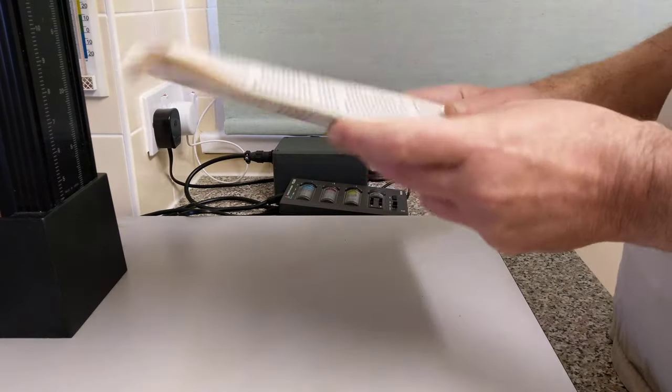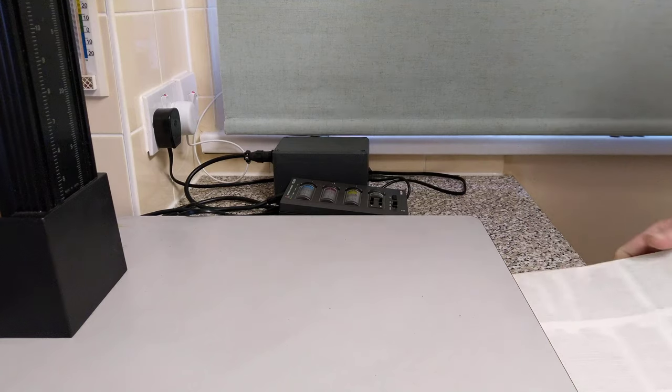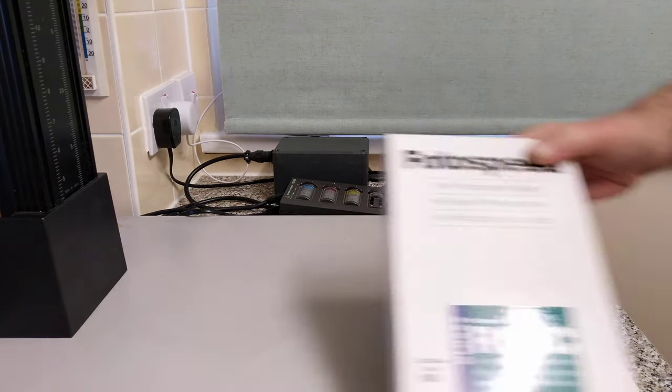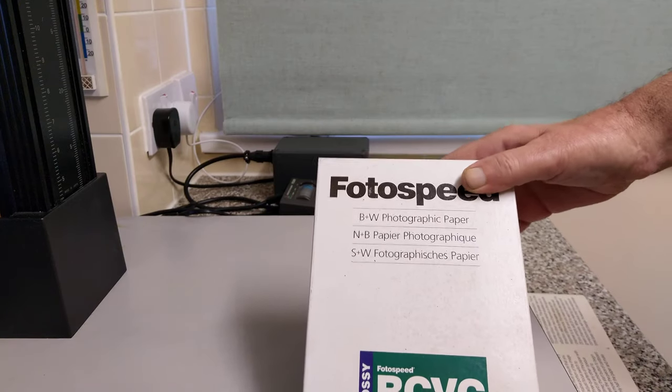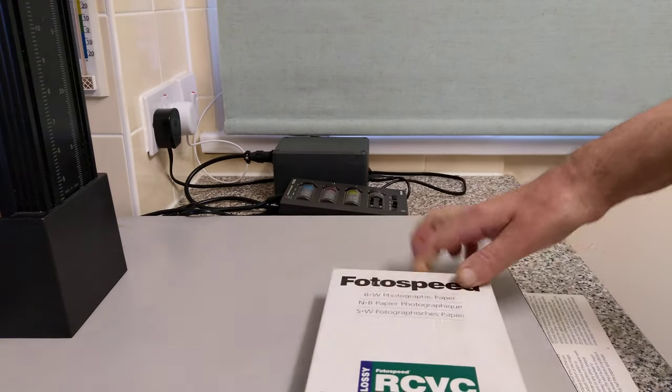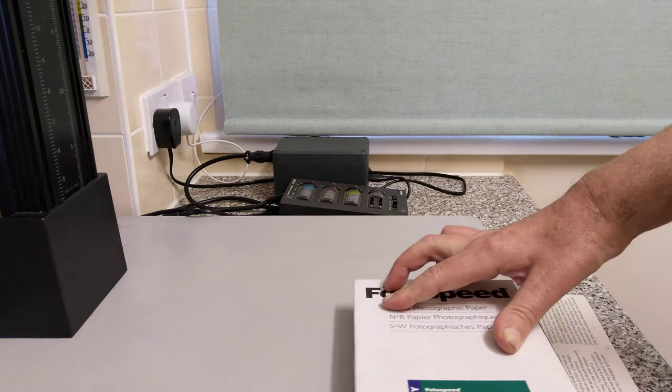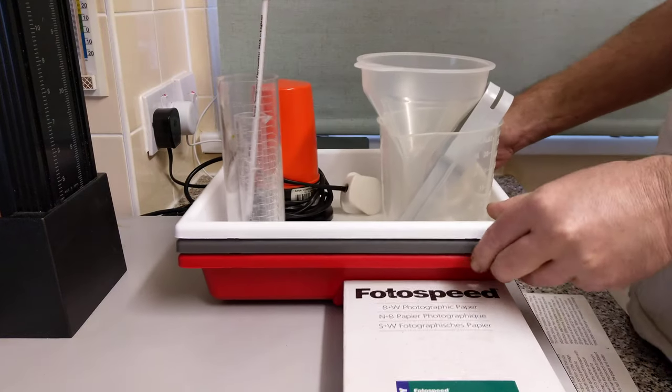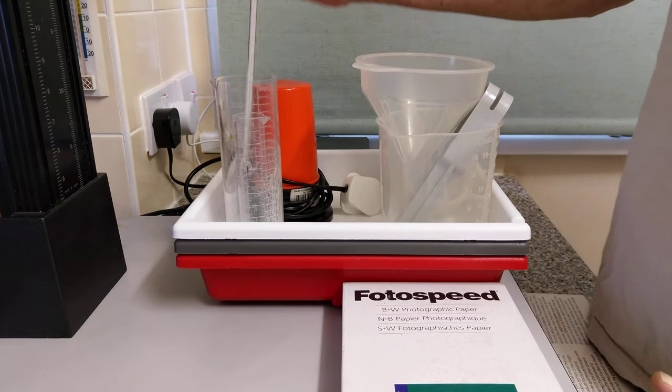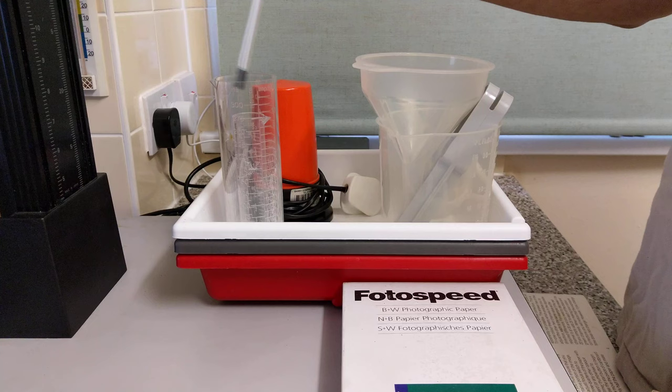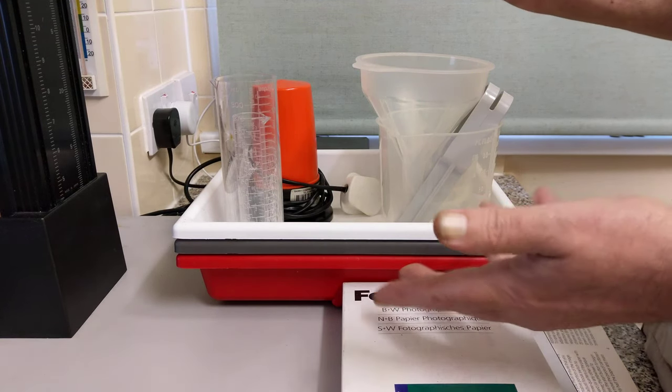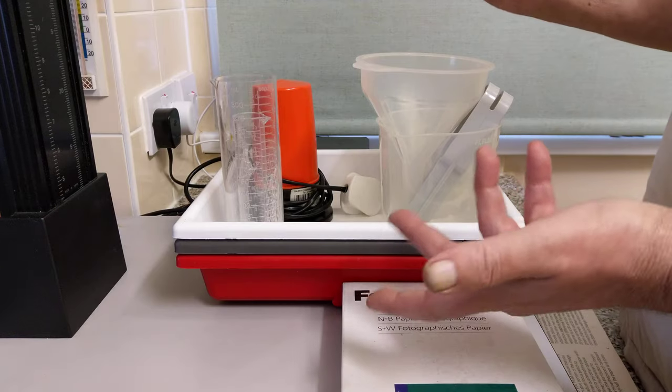Always handy to have the instructions for your enlarger. So you're obviously going to need some photo paper. This is 5x7, just cheap messy paper that I use for playing around with. Don't need a lot of equipment. Thermometer, because this again, like film developing, is temperature sensitive. We've got a set of three developing trays. They're not that expensive, about three pounds each.